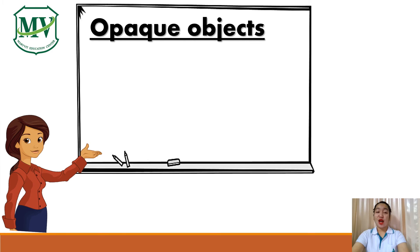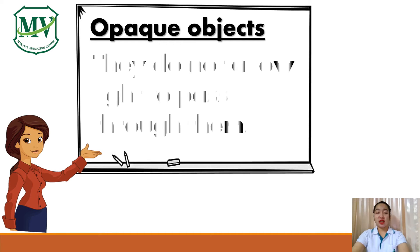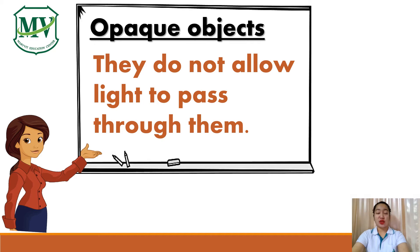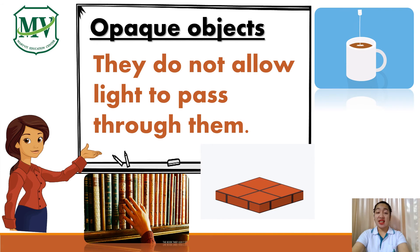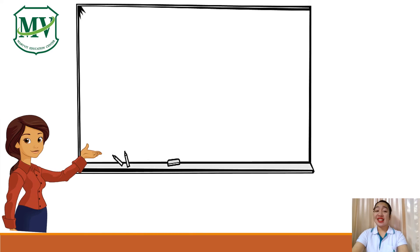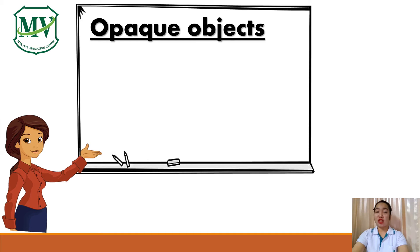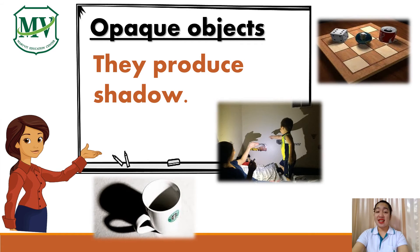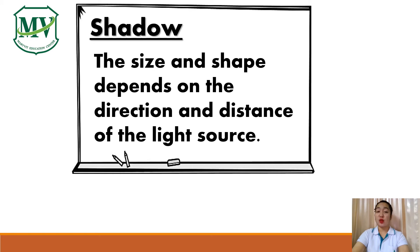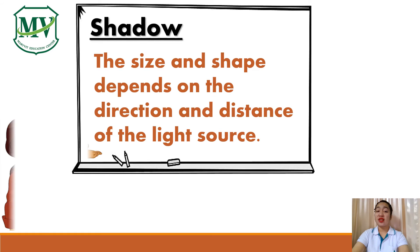Now we will talk about opaque objects. Opaque objects are objects that do not allow light to pass through them. Since they do not allow light to pass through them, we cannot see through them. Examples of opaque objects are books, bricks, and cup. Since light travels in a straight line and opaque objects do not allow light to pass through them, they produce shadow. Shadow is the dark area behind the opaque objects. Remember, the size and shape of the shadow depends on the direction and the distance of the light source.